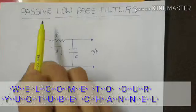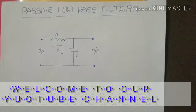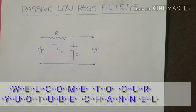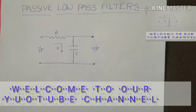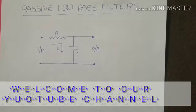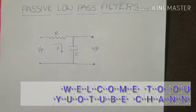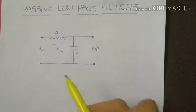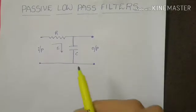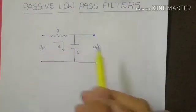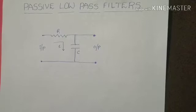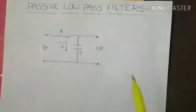Today our topic is passive low-pass filters. As I said in the previous video, in electronics, a filter is nothing but a circuit which filters out the desired output out of some given input. And if this filter is made out of some passive elements like resistor, inductor and capacitor, it is said to be a passive filter.